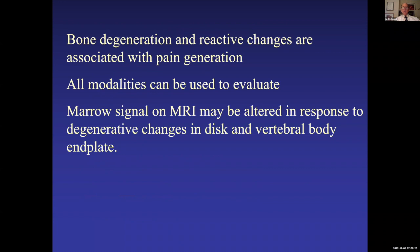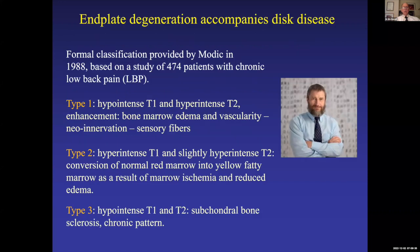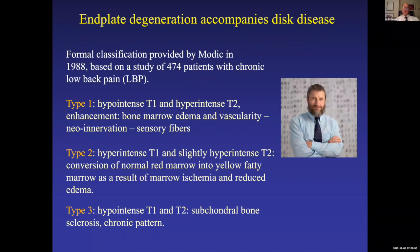Bone degeneration and reactive changes may be associated with pain generation, and we can use all modalities to evaluate that — though bone marrow signal is best seen on MR and bone detail is best seen on CT. Bony changes include what are called Modic changes, named after Mike Modic. Even though he wasn't the first to describe marrow signal changes adjacent to degenerated discs, he's given credit to the point where we have a classification almost everybody uses: Modic Type 1, Type 2, and Type 3.